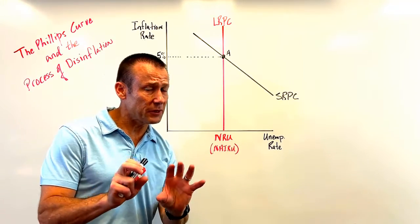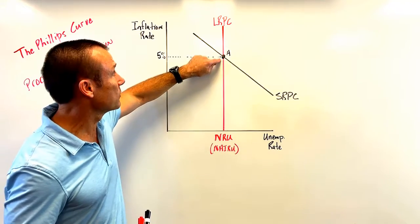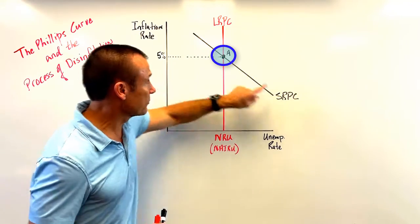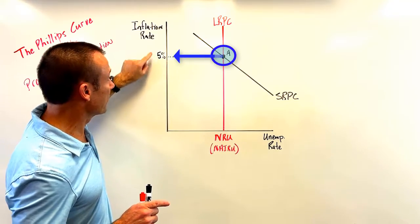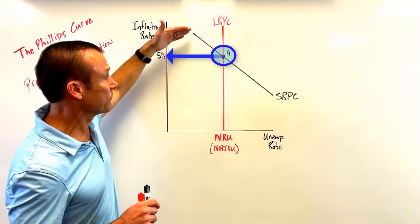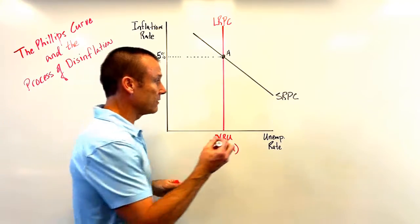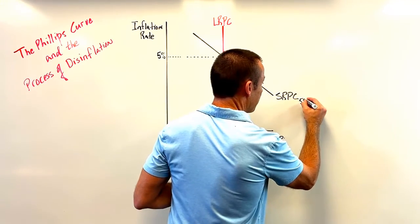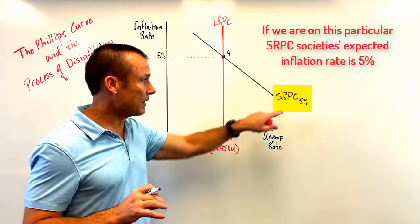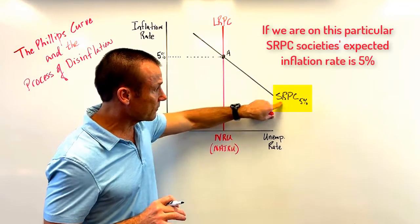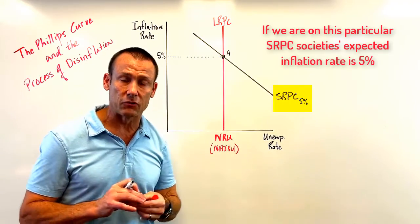To find the expected inflation rate for any given short-run Phillips Curve, go to the intersection point between the LRPC and the SRPC. Look at the inflation rate at that intersection — that is the expected inflation rate for this particular curve. I like to write that as a subscript: for this SRPC, the expected inflation rate is 5%.